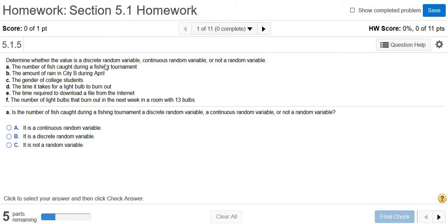Determine whether the value is a discrete random variable, continuous random variable, or not a random variable. For all practical purposes, discrete random variables are whole numbers. Continuous means they could be decimals. And not a random variable would be when it's not even a number. Like when it's a category, that's when we'll say it's not a random variable.